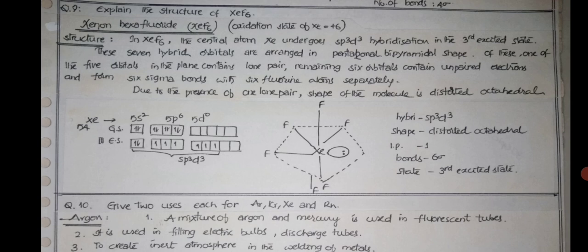That happens in the third excited state. These seven hybrid orbitals, sp3d3, are arranged in pentagonal-bipyramidal shape. Of these, one of the five orbitals in the plane contains a lone pair. Remaining six orbitals contain unpaired electrons and form six sigma bonds with six fluorine atoms respectively.